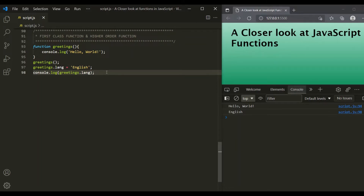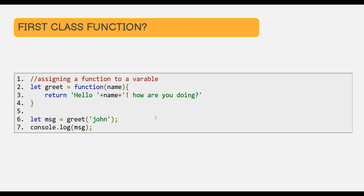Let's see some examples of first class functions. Here we are assigning a function to a variable, and it is possible because in JavaScript a function is just another value, and we can assign a value to a variable. This syntax is called a function expression, where we assign an anonymous function to a variable.